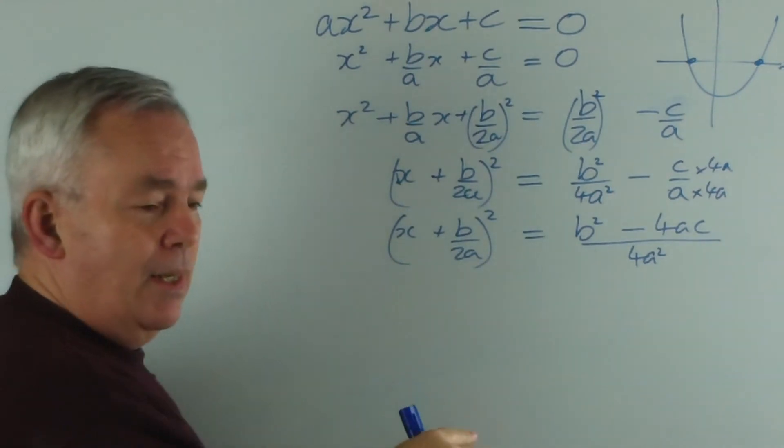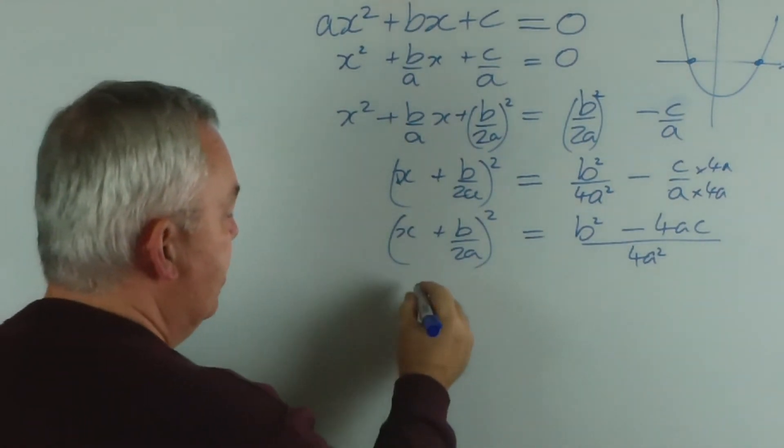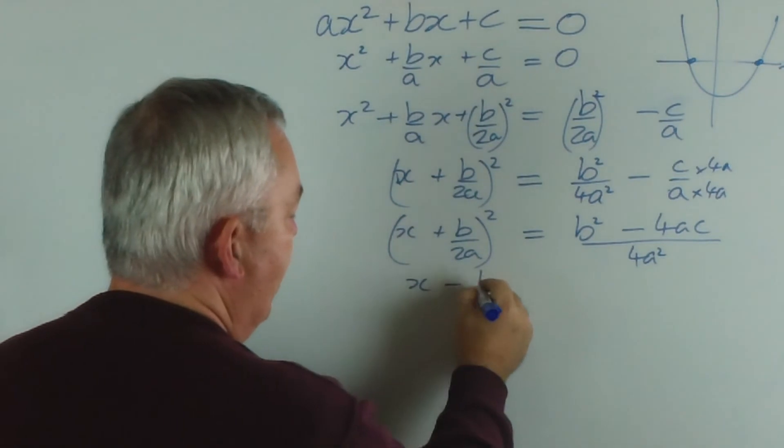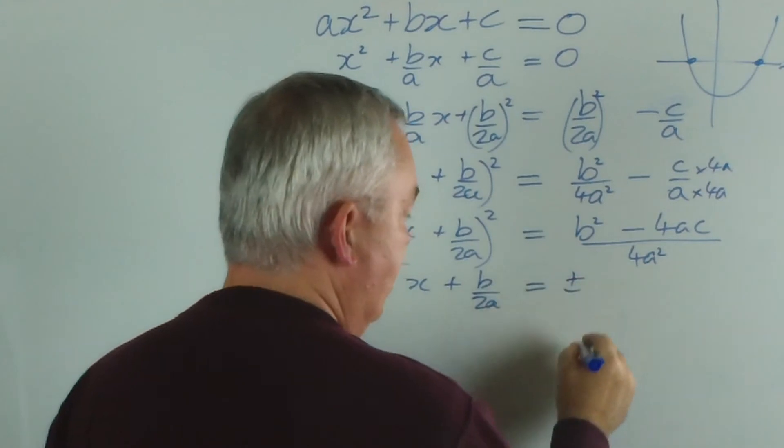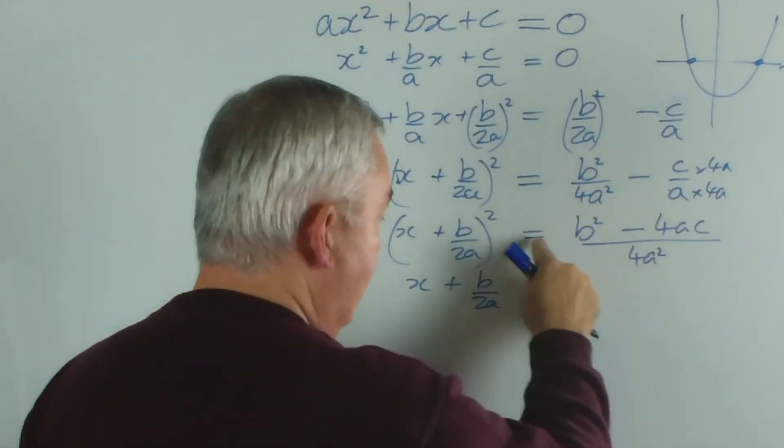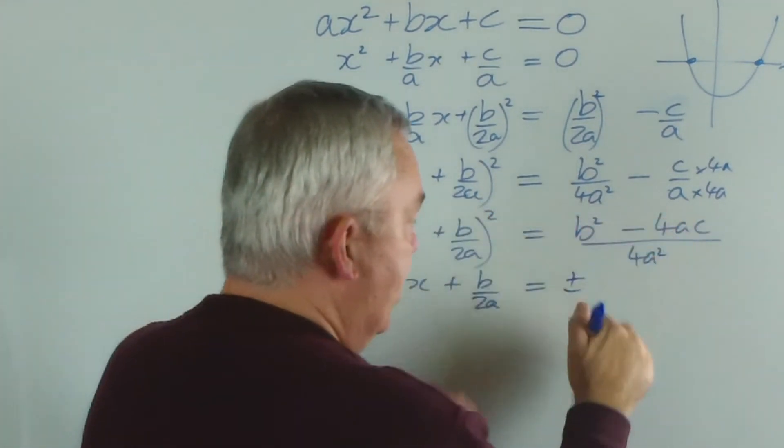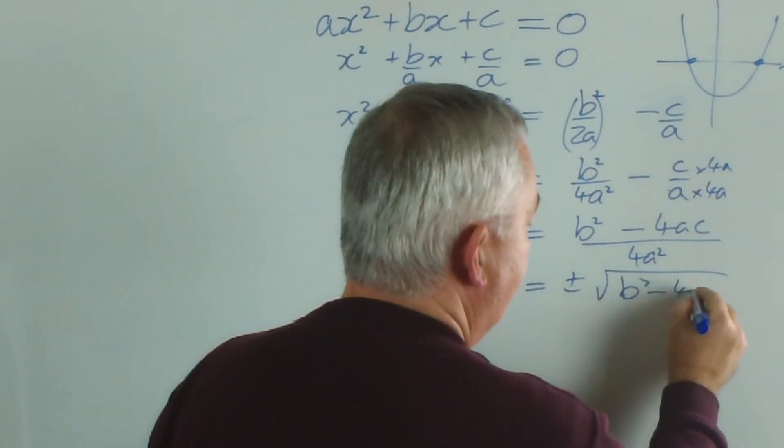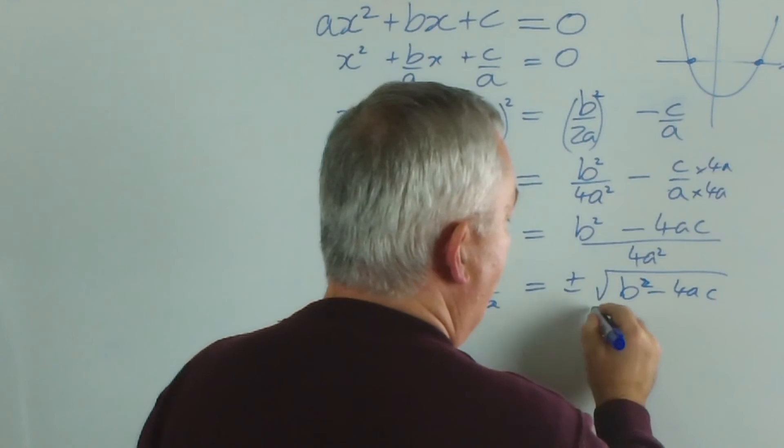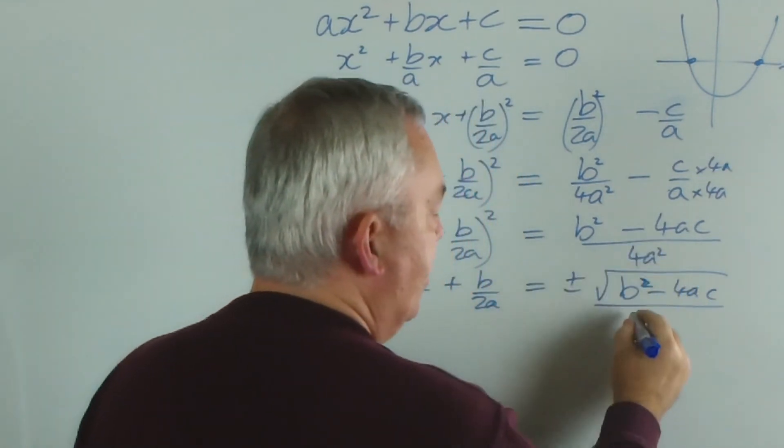But I'm going to do two steps at once and remove the absolute value and replace it with a plus and minus sign on this side. The square root of that is this. The square root of this is the square root of b-squared minus 4ac. And the square root of 4a-squared is 2a.